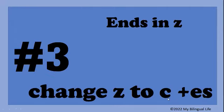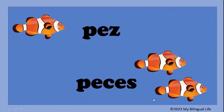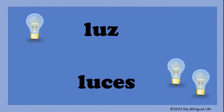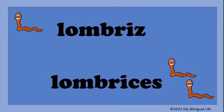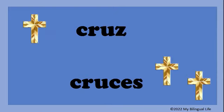The third rule is if it ends in a Z, change the Z to a C and add ES. Pez, peces. Luz, luces. Lombriz, lombrices. Cruz, cruces.